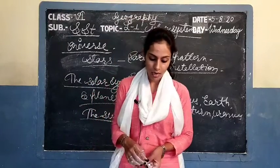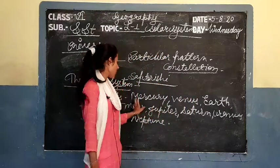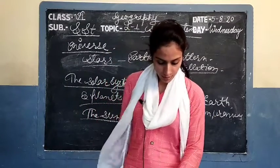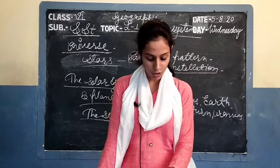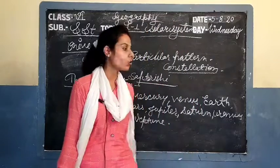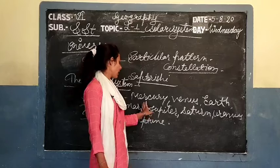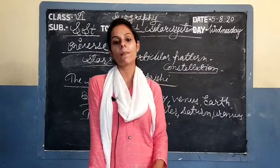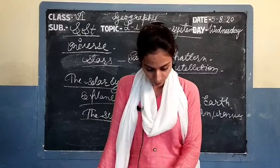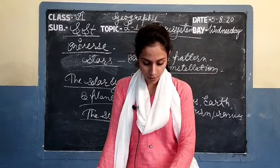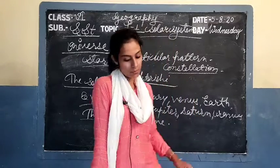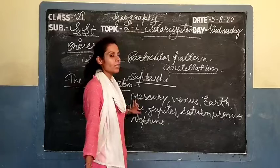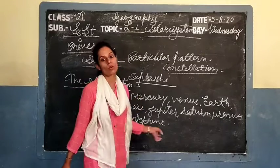Mercury, which is the nearest planet to the sun, completes its revolution in 88 days, so it is the fastest planet. Neptune, which is the farthest planet, takes 164.8 years to complete its revolution. Jo sun ke sabse paas mein hoga, usse sabse kam time lagega, aur jo sabse dur hoga, usse sabse zyada time lagega.